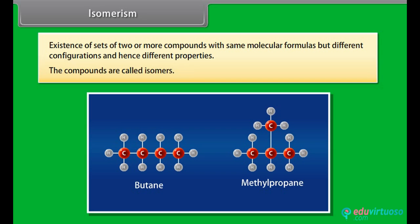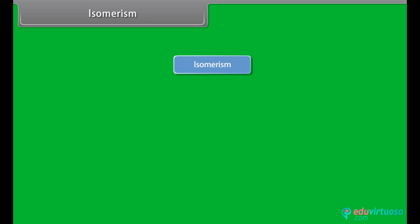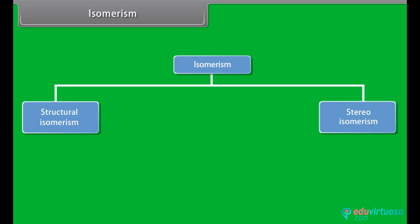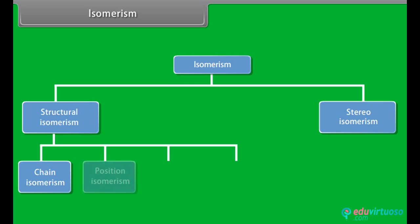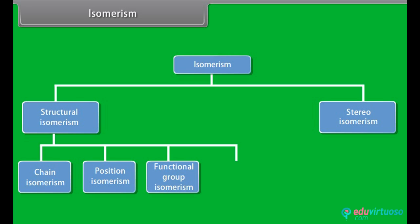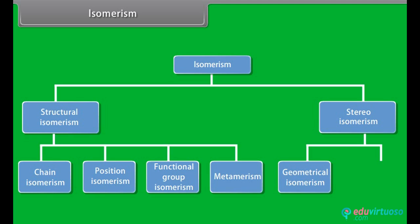The compounds are called isomers. Isomerism can be grouped into structural and stereo isomerism. Structural isomerism can be subdivided into chain isomerism, position isomerism, functional group isomerism, and meta-isomerism. Stereo-isomerism is further categorized into geometrical and optical isomerism.